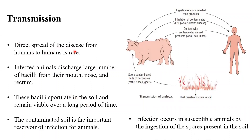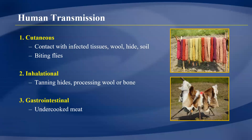Transmission is fairly straightforward. Direct human-to-human spread is very rare; commonly the disease comes from animals. Infected animals discharge large amounts of bacilli from the mouth, nose, or rectum. These bacilli then reach the soil and form spores, which settle on grass and soil and can persist there for a long time. Contaminated soil is therefore an important reservoir, and susceptible animals become infected by ingesting spores while grazing.